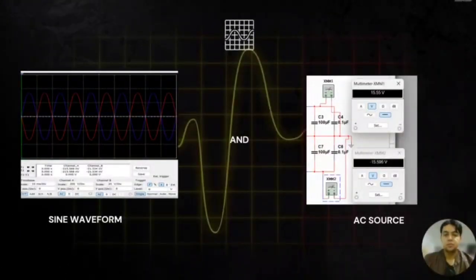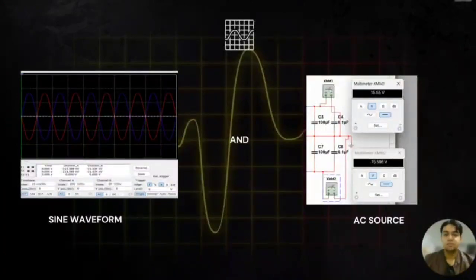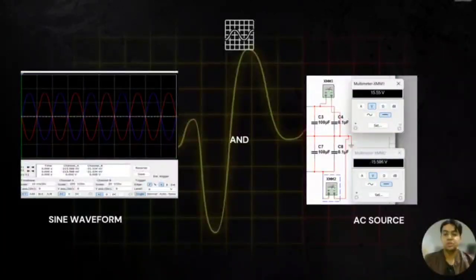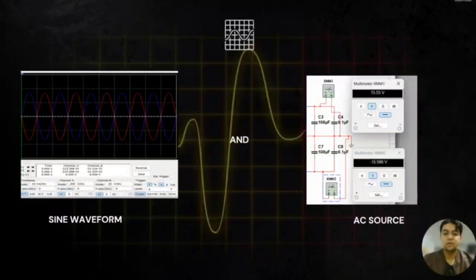The simulation waveform is captured in Multisim using an oscilloscope. In the simulation, the voltage is maintained at 15V and negative 15V. In the experimental setup, the AC input voltage was set at 240V. The results demonstrate the expected waveform with no temporal overlap between channel A and channel B. The multimeter SMM1 measures the voltage across capacitor C4, reading 15.55V, which is the peak voltage of the oscillating signal. The multimeter SMM2 measures the voltage across capacitor C8, reading negative 15.55V, equal in magnitude but with opposite polarity, because C4 and C8 are connected in series.